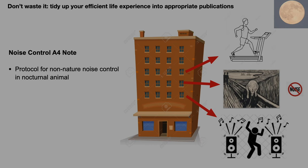I want to start with a story. One Wednesday, I was writing late at midnight. Then I heard noise both from upstairs and downstairs, including party noise and footstep noise. I quickly took out a paper from the drawer named 'Protocol for Non-Nature Noise Control in Nocturnal Animal.' After following each step listed on that paper, in a moment, the noise quieted down. Then I could re-enjoy my piece of writing that night.